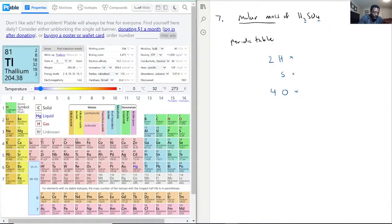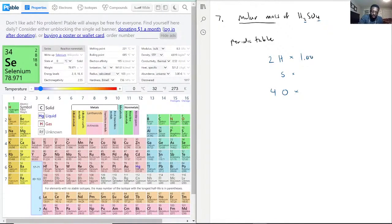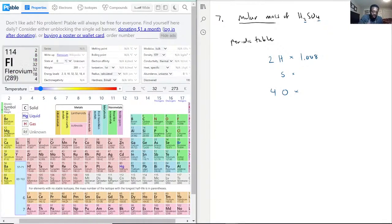So we have, let's start with H, 1.008. Sulfur is 32.06, and oxygen 15.999.